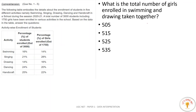Question 3: What is the total number of girls enrolled in swimming and drawing taken together? Girls in swimming is 245, girls in drawing is 280. Adding together: 245 + 280 = 525. So the answer is 525.